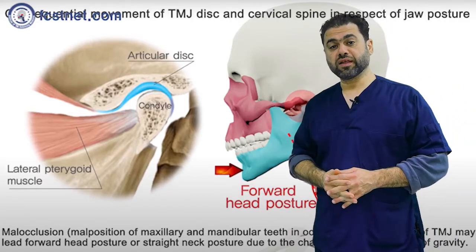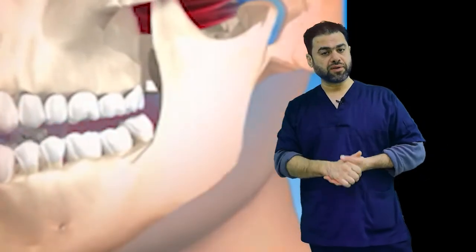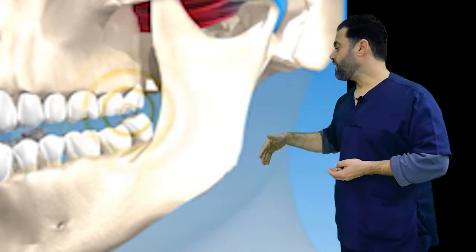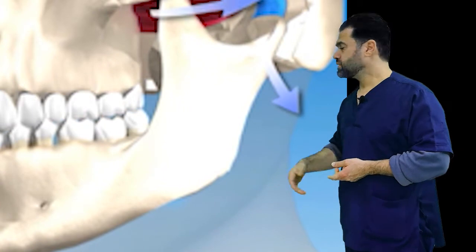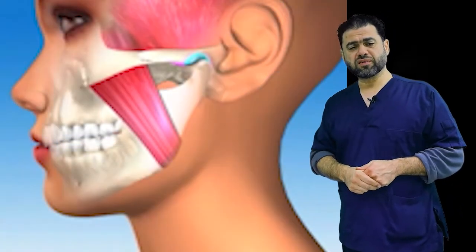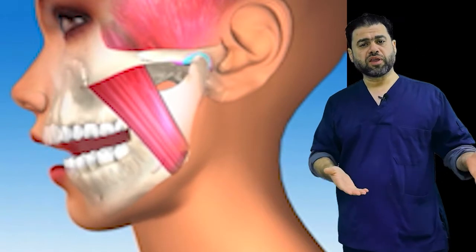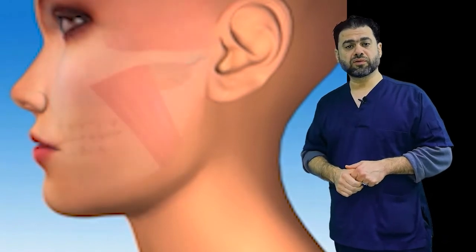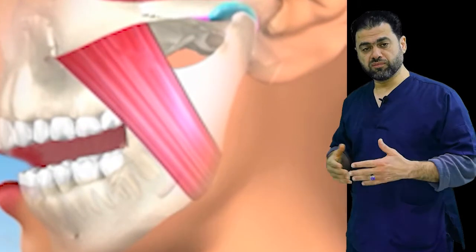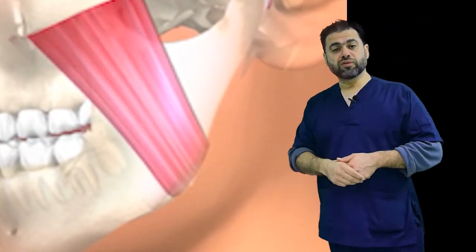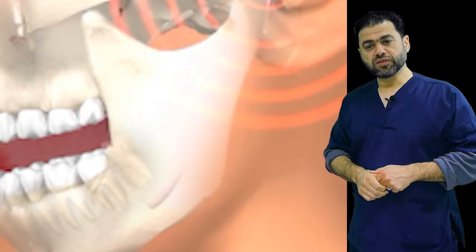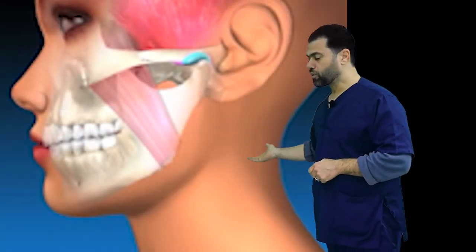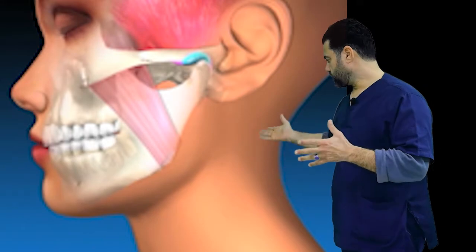Before, they taught us that TMJ disorder is related to bad occlusion, and that to correct TMJ disorder you had to correct the occlusion first. But this has been proved not to be true. Many studies show that patients with a very good bite still develop TMJ problems, and many people with a bad occlusion show no symptoms at all. So now it's believed that TMJ disorder is not related to occlusion — there are other factors which we are going to discuss.